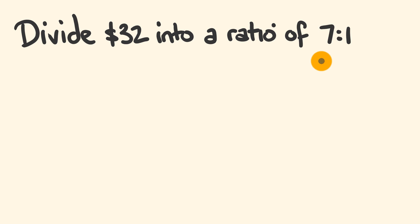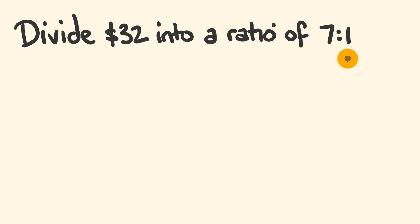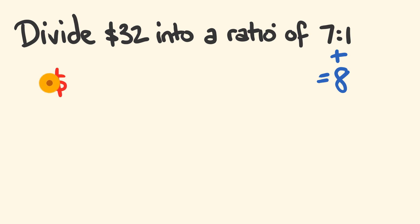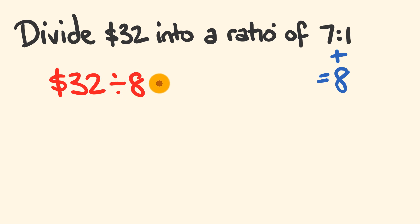This means that one person is getting seven parts and the other person is getting one part. So the first thing we do is we look at how many parts altogether. We add these two numbers together: 7 plus 1 is equal to 8, there are 8 parts altogether. Now we get our $32 and we divide it by this number of parts. So 32 divided by 8 means that each part is equal to $4.